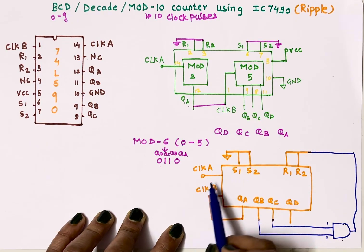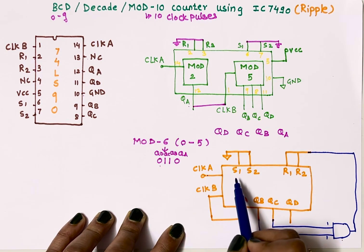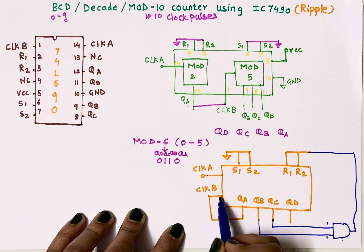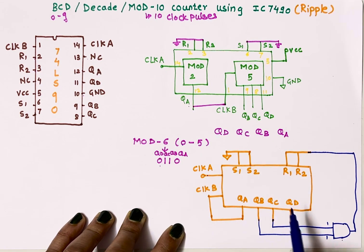Set pins are connected to ground. Clock A will receive external clock, QA is connected to clock B, and we will observe our output at QA, QB, QC, and QD. Here QA is LSB and QD is MSB.